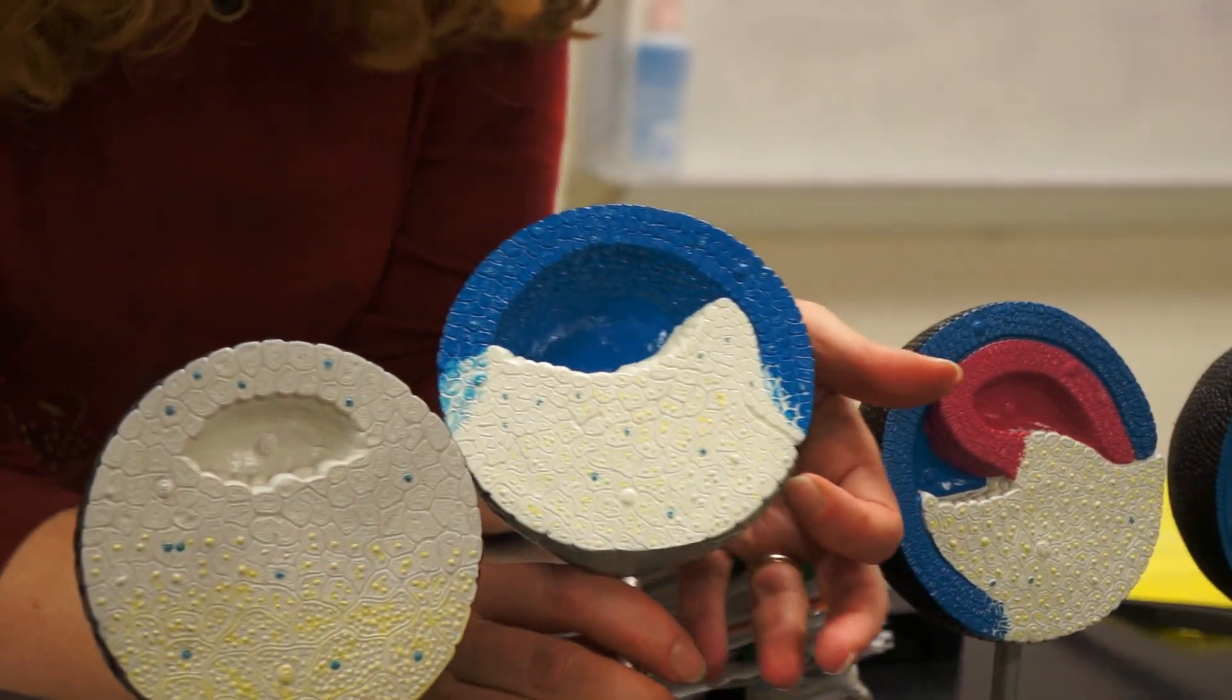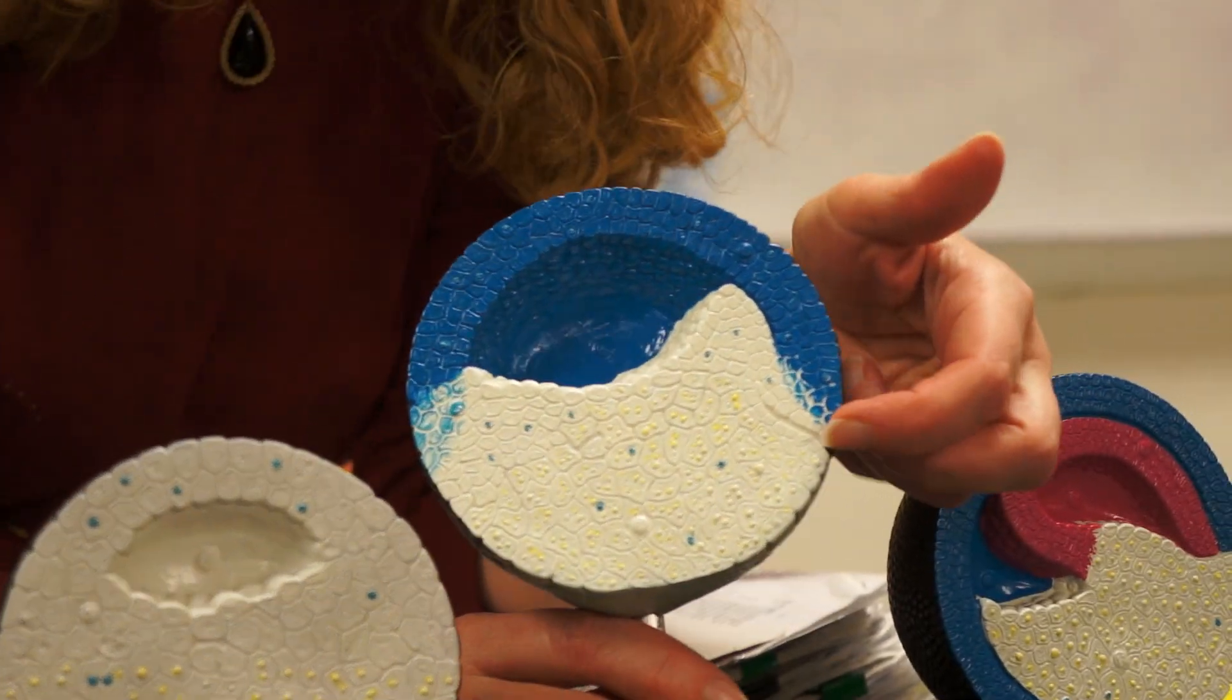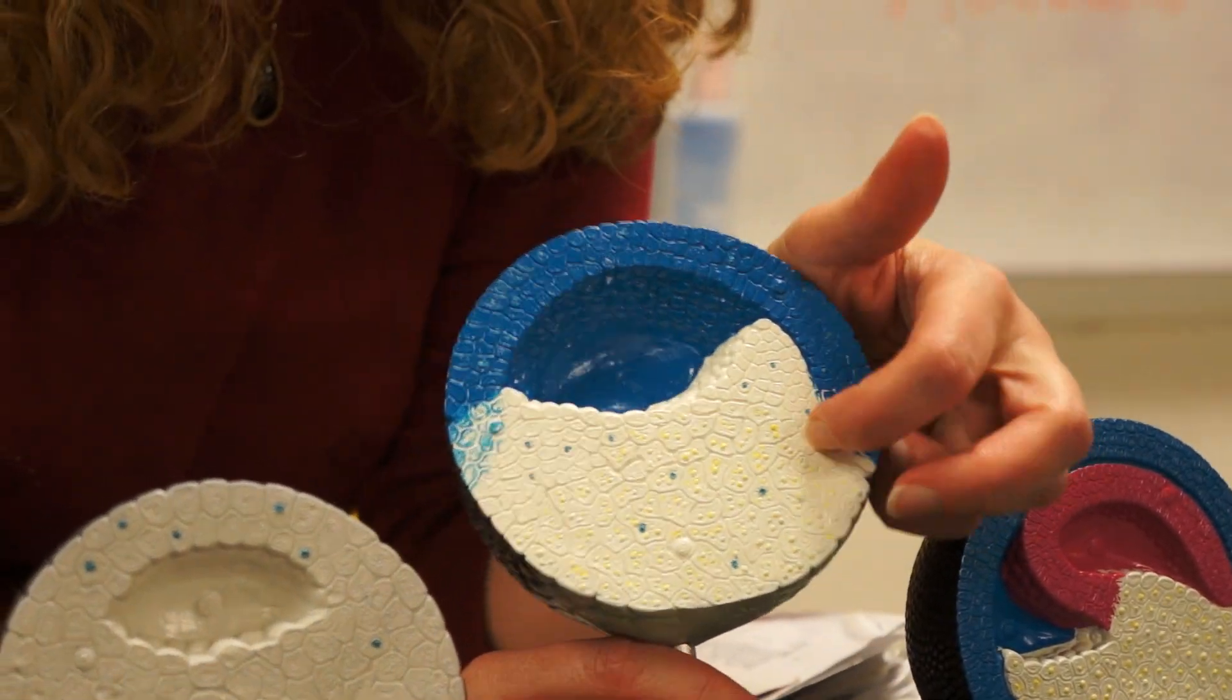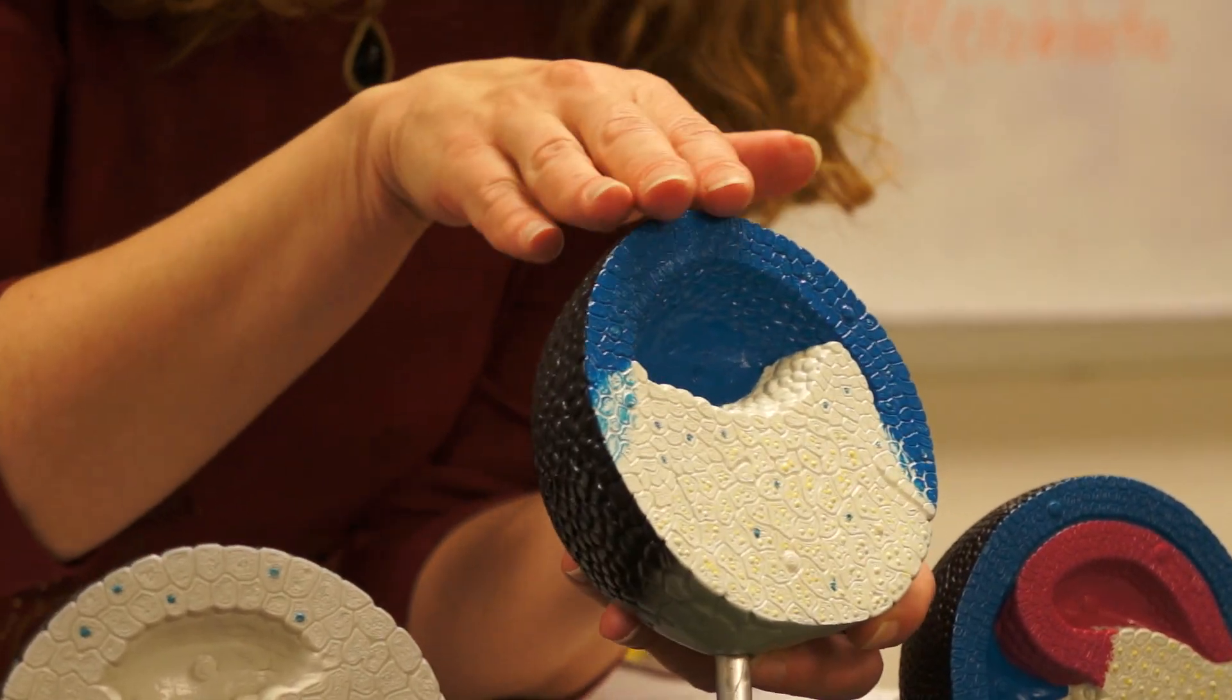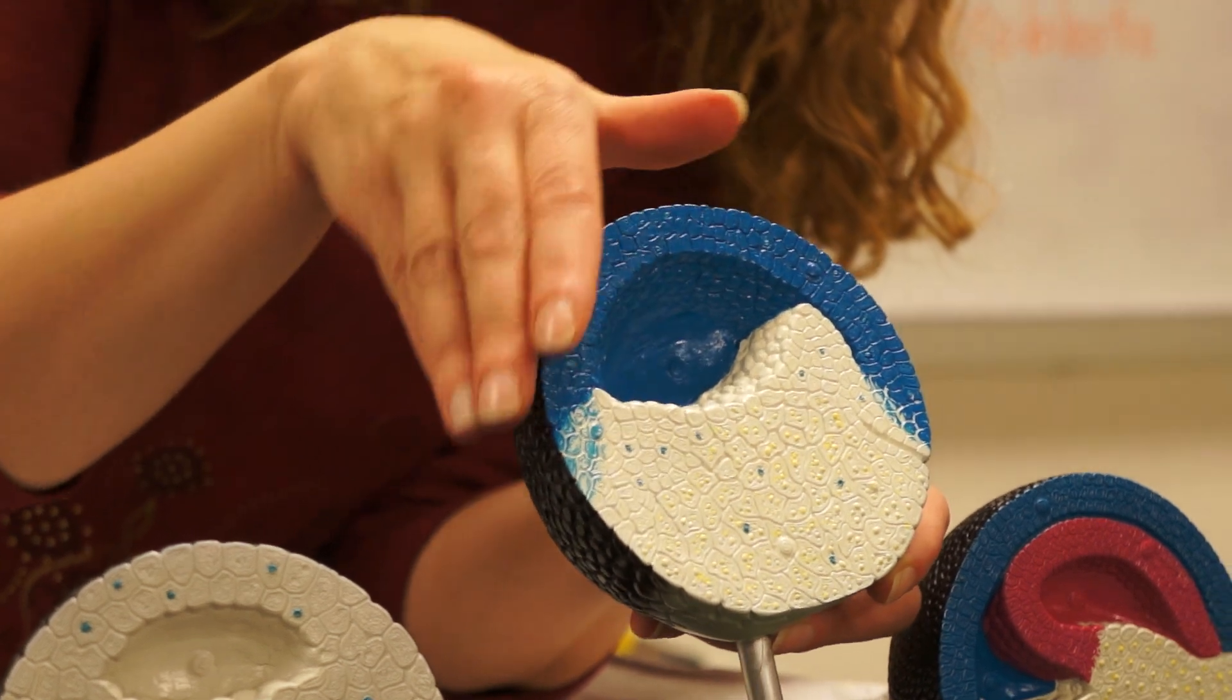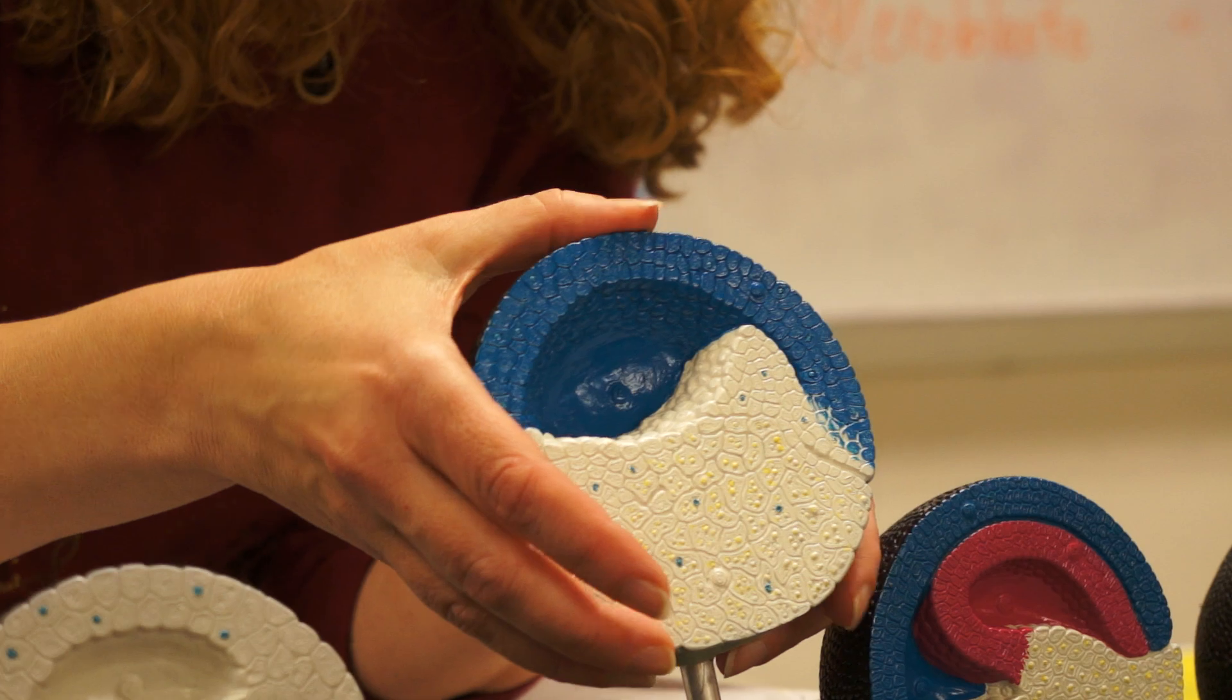This is the beginning of gastrulation. The animal pole cells are beginning to involute here at the vegetal pole and to migrate inward. At the same time the animal pole cells on the other side are coming down to envelop the yolk cells on the opposite side.